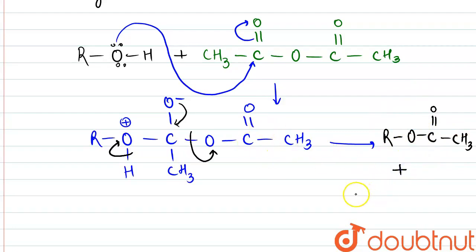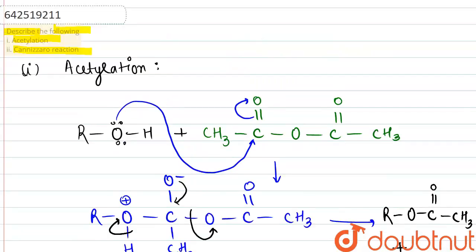So this process is known as acetylation. And after this, the leaving group, CH3, C double bond O, this will be taking away this hydrogen and will be forming the acid, CH3COOH. This is how acetylation happens.